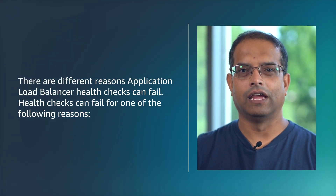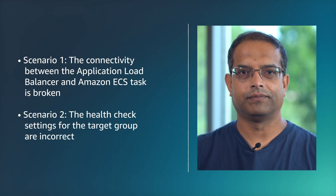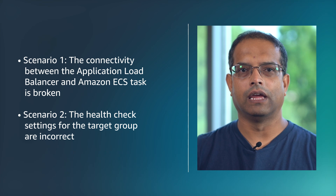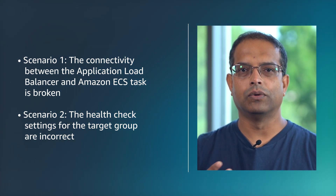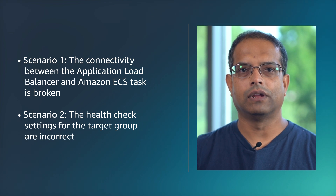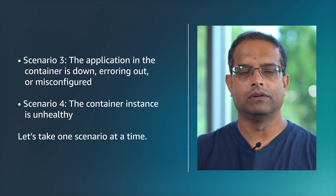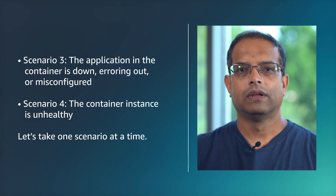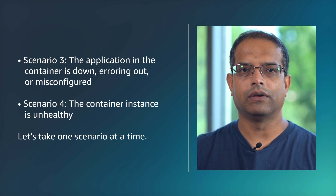There are different reasons ALB health checks can fail. Health checks can fail for one of the following reasons. Scenario 1: the connectivity between the ALB and Amazon ECS task is broken. Scenario 2: the health check settings for the target groups are incorrect. Scenario 3: the application in the container is down, erroring out or misconfigured. Scenario 4: the container instance is unhealthy. Let us take one scenario at a time.